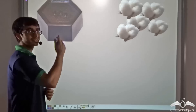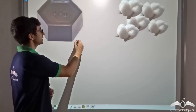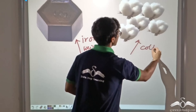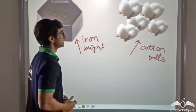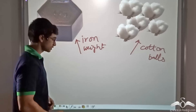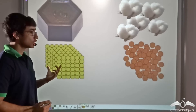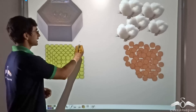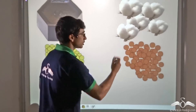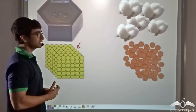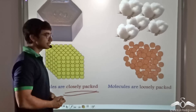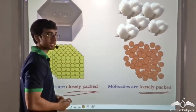So now let us consider two different kinds of materials. Over here we are considering an iron weight and over here we are considering cotton balls. Now let us consider what the molecular arrangement of the iron weight will be as compared to that of cotton balls. This diagram shows a schematic of the molecular arrangement in an iron weight. As you can clearly see, in an iron weight the molecules are very densely packed, whereas in the case of cotton balls the molecules are not as densely packed — they are comparatively quite loosely packed.